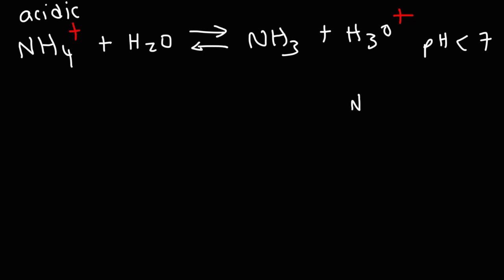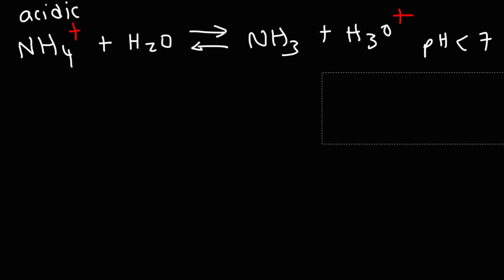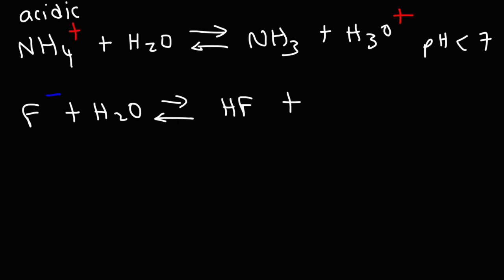A neutral ion like the sodium chloride ion will keep the pH of the solution approximately at 7. Now consider fluoride — it's a basic ion. When it reacts with water, it abstracts a proton from H2O, turning it into the conjugate acid HF and releasing hydroxide ions into the solution. Any salt or ion that produces hydroxide ions in solution is a basic salt because it increases the pH of the solution.